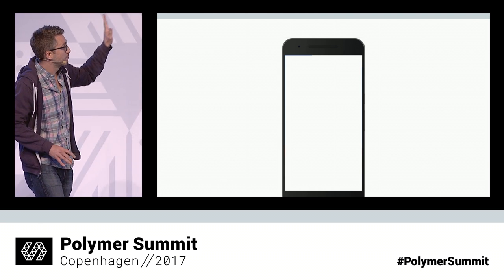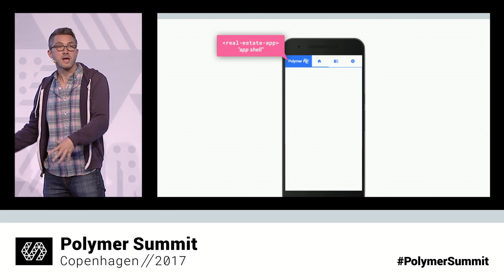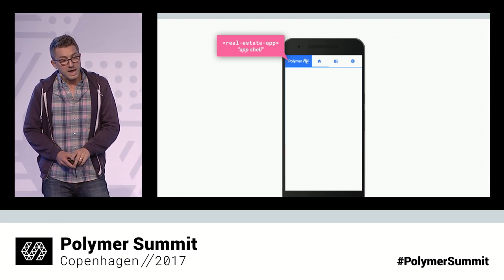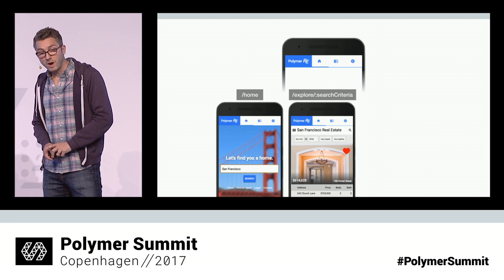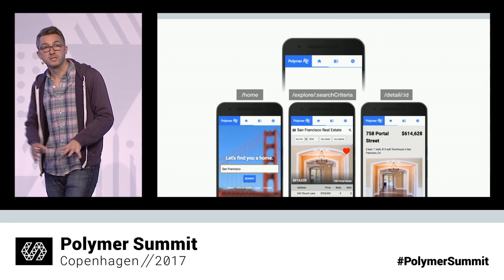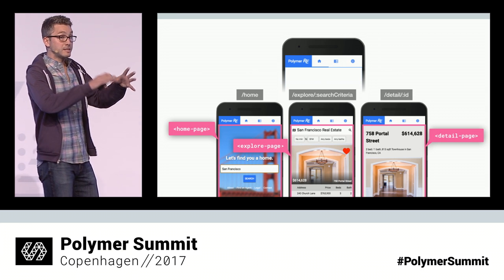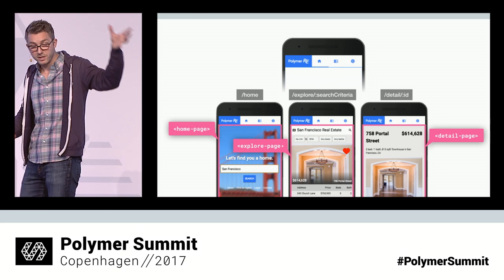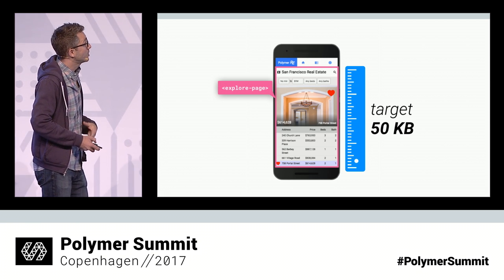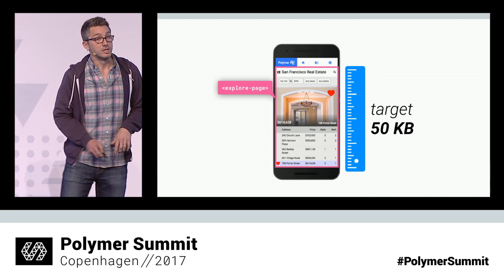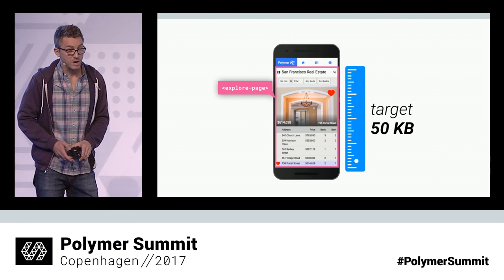Let's see what applying the PRPL-50 pattern looks like in our real estate app. We start with an application shell responsible for handling the route on the client and loading top-level components for the route. Then we break the application down into meaningful routes: a home route, an explore route, and a detail route. For each of those routes, we build a custom element that encapsulates the view needed. Following the PRPL-50 pattern, we keep an eye on the code going into each route and try to stay within our 50 kilobyte budget. This is how we approach meeting all our performance requirements and ensuring a good structure for the app.